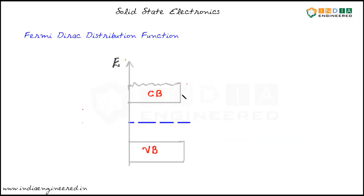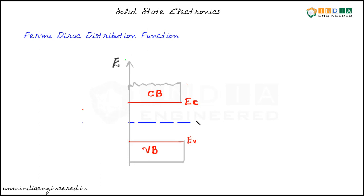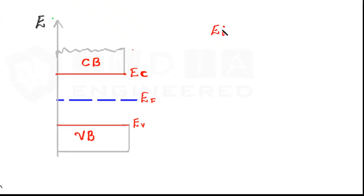Let's see some of the important notations we will be using in the coming discussions. To represent the energy level corresponding to the top edge of the valence band, we use EV. EC is used to denote the bottom edge of the conduction band. For the Fermi level, we use EF, and if we mention specifically the intrinsic material's Fermi level, we use EI.